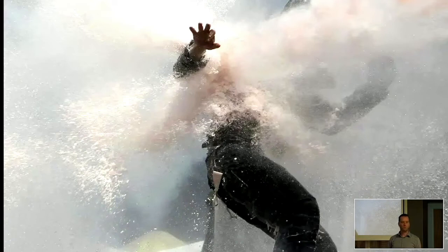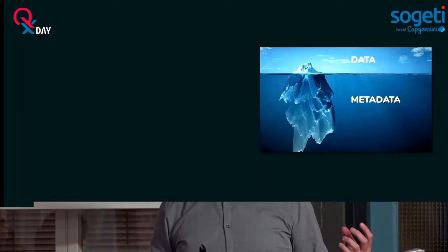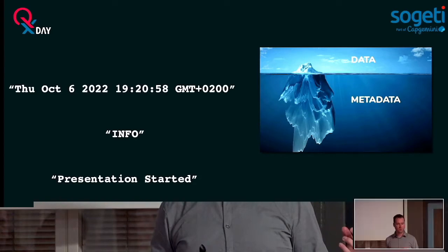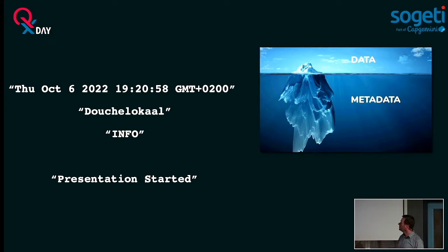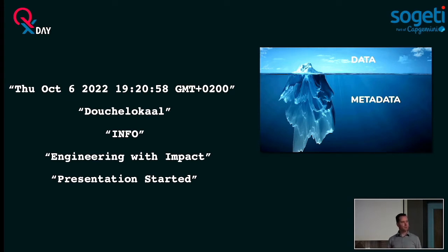We need to solve something extra. For those in the data or analytics area, this is probably not new. We have data and we can attach metadata to it. So what kind of metadata can we add? Let's start with logs. What if we add something extra — useful information? So we're in the DushLokal, about engineering with impact. We've already added a bit of extra information that's useful and that we can actually filter upon.